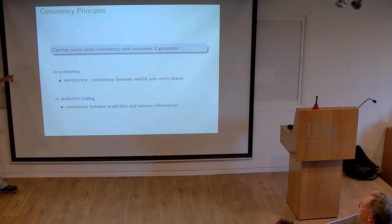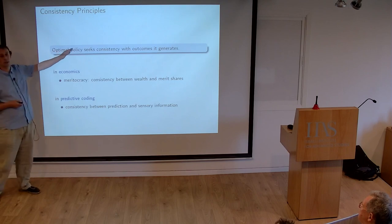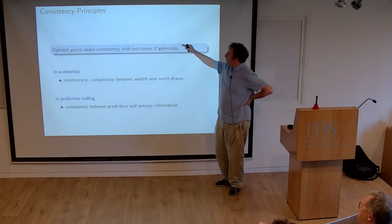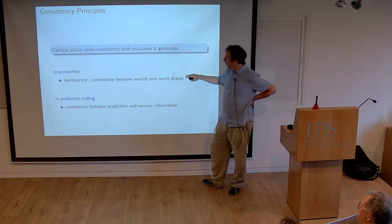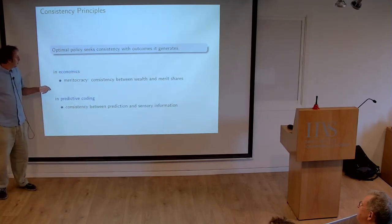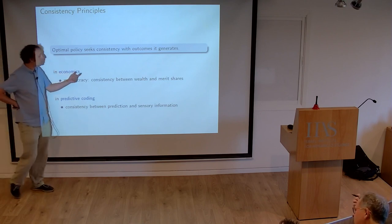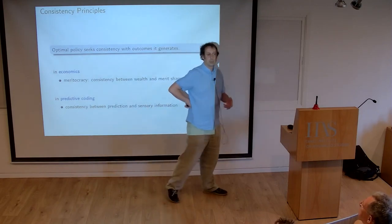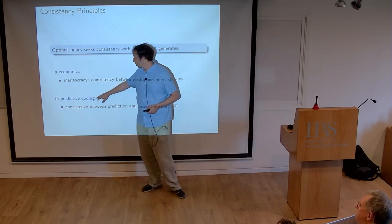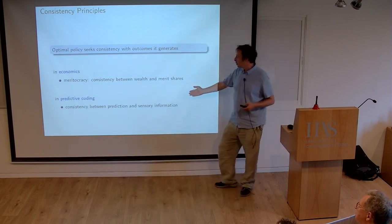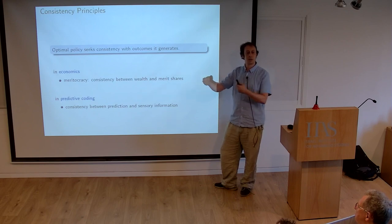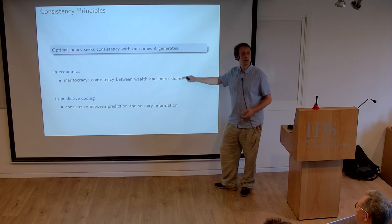Since you are maximizing the growth rate across a space of policies, general consistency principles arise that apply across domains. The optimal policy — the one that maximizes the growth rate in either domain — seeks some consistency with the outcomes it generates. In economics, this means a policy maximizing wealth growth also satisfies a meritocracy fairness principle. In the predictive coding literature, systems well-adapted to process sensory information predict it as consistently as possible given restrictions. These turn out to be mathematically equivalent.